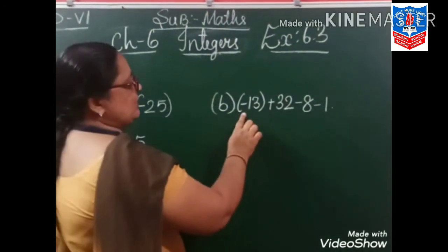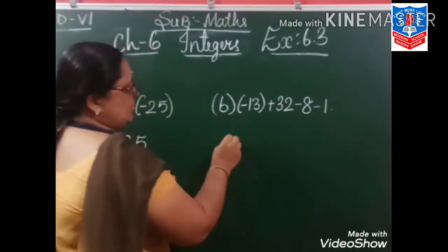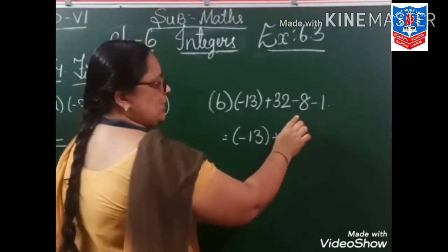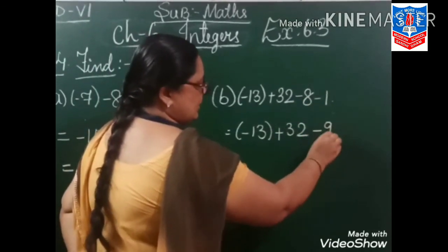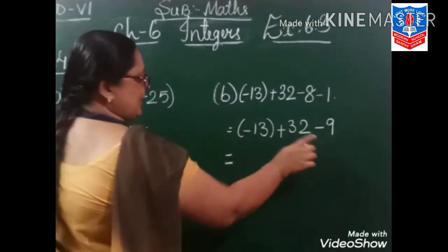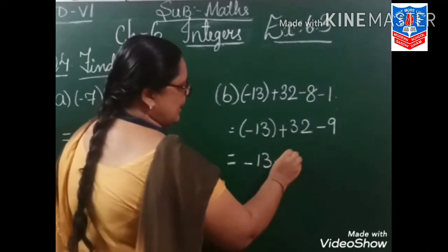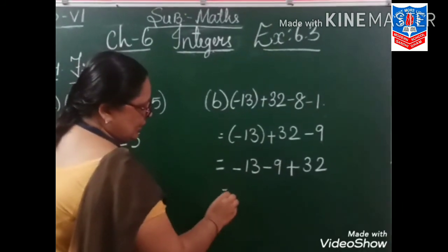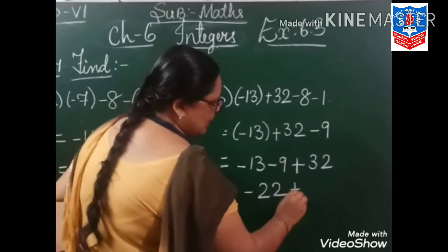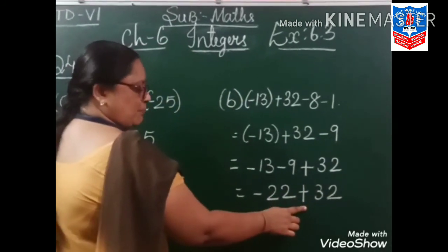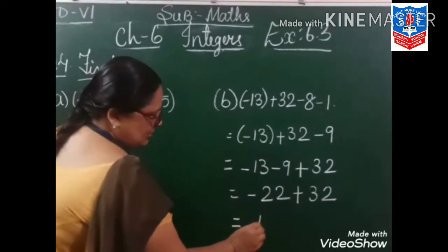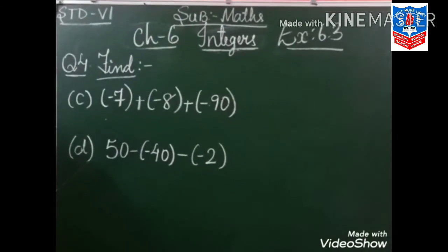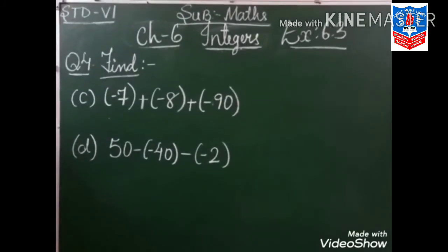Second: minus 13 plus 32 minus 8 minus 1. So minus 13 plus 32 — minus minus is plus, 8 plus 1 is 9, and the greater sign is minus. Let us bring the minuses together: minus 13 minus 9 plus 32. Minus minus is plus — 13 plus 9 is 22, and the greater sign is minus 22 plus 32. Minus plus minus — 32 minus 22 is 10. Some numbers C and D is your homework. With this, we have completed our chapter.